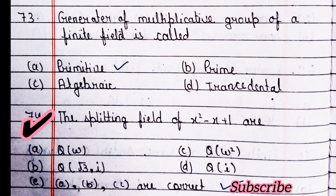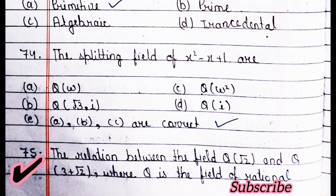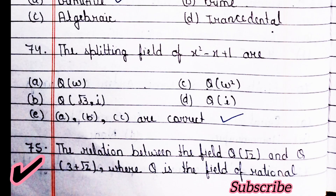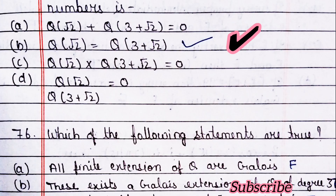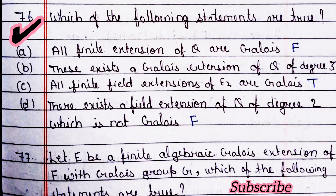The splitting fields of this are — options A, B, and C are correct. Next question: the relation between field Q(√2) and Q(∛3 + √2), where Q is the field of rational numbers — option B is right, Q(∛3) equals Q(∛3 + √2).